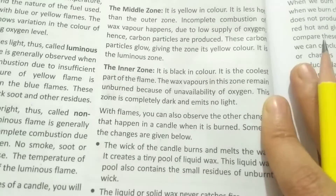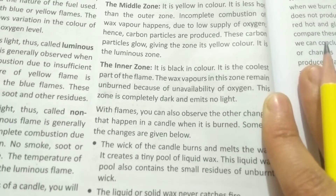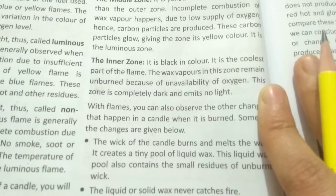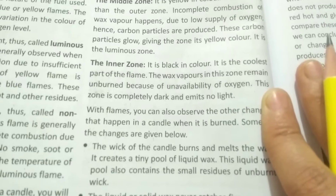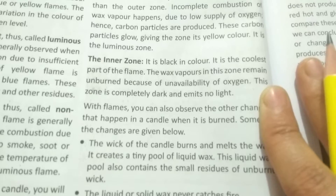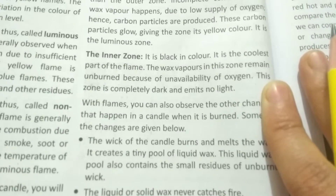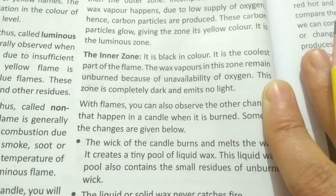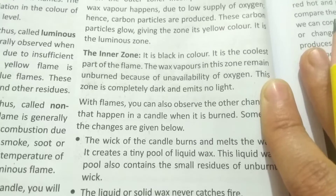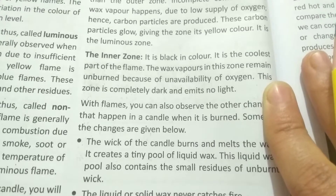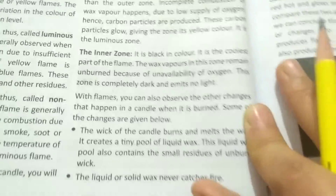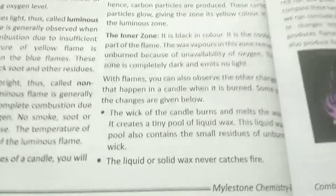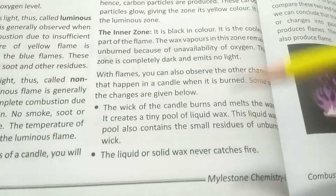The inner zone is black in color and is the coolest part of the flame because oxygen is least available here. The wax vapor in this zone remains unburned due to unavailability of oxygen. The zone is completely dark and emits no light.